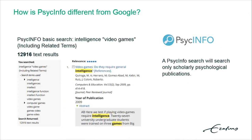What you need is a field-specific database. In my area, that database is PsycINFO. If you type in 'intelligence and video games' in PsycINFO, you get about 13,000 results, but all of those are scholarly papers, because PsycINFO will only yield references to psychological publications.